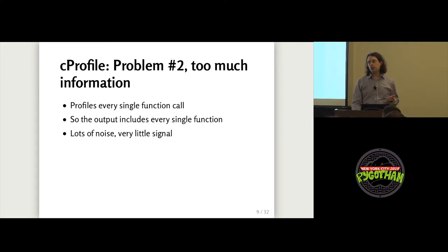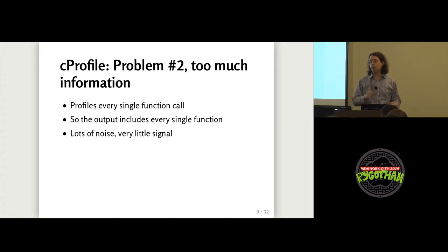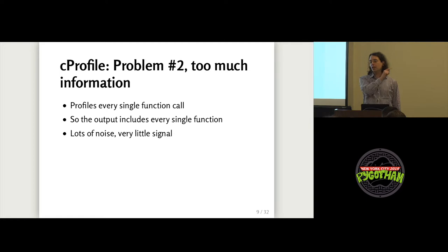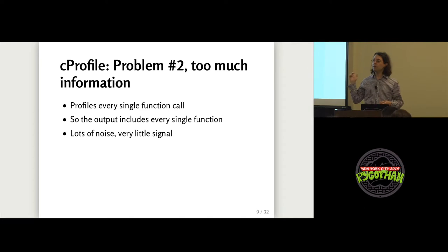The second problem is that CProfile gives you too much information. It profiles every single function that gets called as your program runs — that's why it's called a deterministic profiler, because it records everything. The problem is that most of the code running in your program probably isn't impacting performance at all, but CProfile still outputs a giant table for every single function saying it took almost no time. The functions you care about are interleaved with all the noise, and you have to do extra work to filter it out.